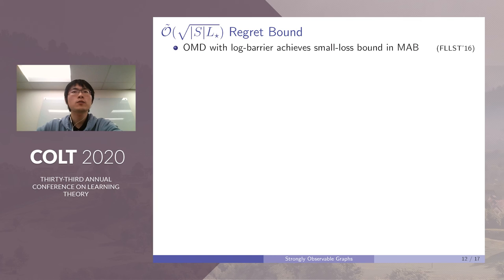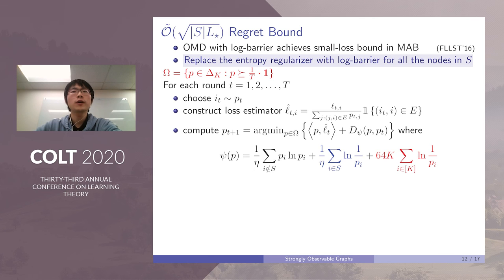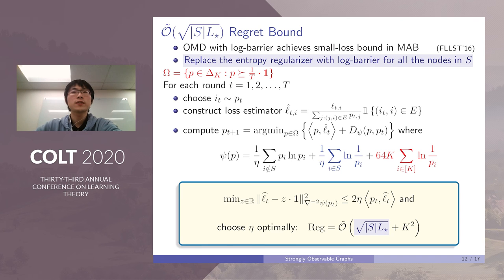Now we consider how to achieve small-loss bounds in GMAB. As OMD with log barrier regularizer achieves small-loss bounds in MAB, we replace the entropy regularizer by log barrier for all the nodes in S. And all the other parts are the same as the previous algorithm. And with this regularizer, we can prove that the shifted local norm is upper bounded by 2η times the inner product between p_t and L_t hat, which is enough to achieve small-loss bounds √(|S|L*) by choosing η optimally.